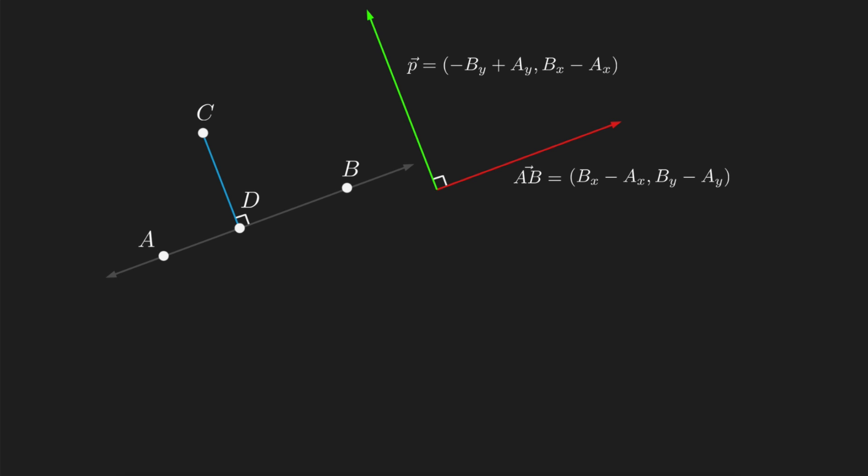Now, depending on which component we make negative, we'll get either this perpendicular vector, or this one. As it turns out, we really don't care which one it is, it doesn't need to be the one that points towards point C or anything, so I'll just pick the first one.